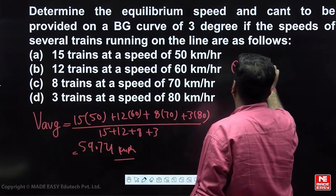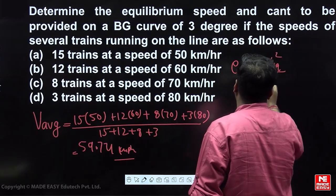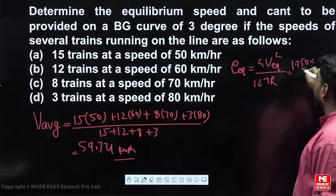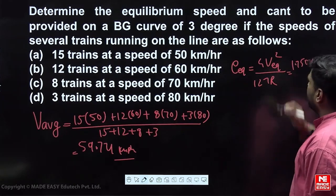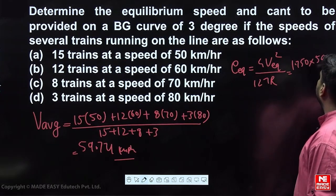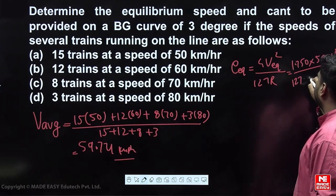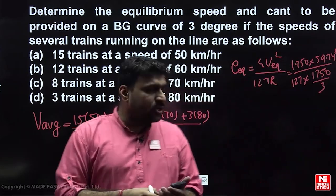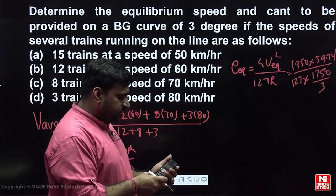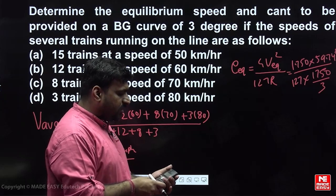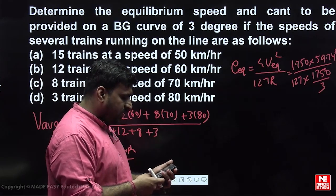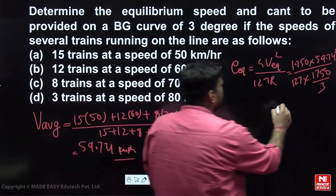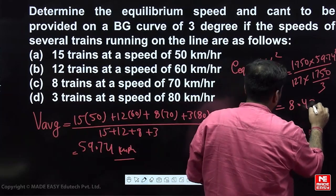The equilibrium cant is calculated using the formula: e = G × V_equilibrium² / (127 × R). The gauge G is 1.750 m (dynamic gauge as per new guidelines), V_equilibrium is 59.74 kmph, and the radius R is 1750/3 (since it is a 3-degree curve). So: 1.750 × 59.74² / (127 × 1750/3), which comes out to be 8.43 cm.